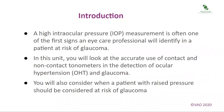A high intraocular pressure measurement is often one of the first signs an eye care professional will identify in a patient at risk of glaucoma. In this unit you will look at the accurate use of contact and non-contact tonometers in the detection of ocular hypertension (OHT) and glaucoma. You will also consider when a patient with raised pressure should be considered at risk of glaucoma.